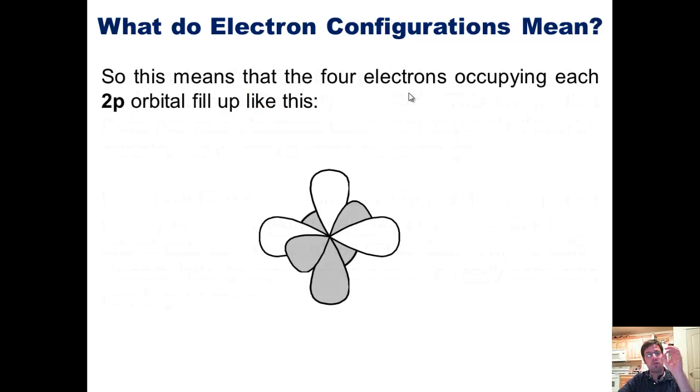So this means that the four electrons occupying each 2p orbital fill up like this. The first one goes here, the second one goes here, and the third one goes here. Now, keep in mind that each of these dumbbells is one 2p orbital, and there are three total 2p orbitals, one along the x-axis, one along the y-axis, and one along the z-axis. So thus far, I've had three electrons be able to each occupy an orbital and not be paired.